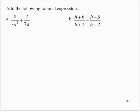So the first thing we need to do before we can add any rational expressions is find an LCD. So the LCD, we have 3 times a square. We have 7 times a. The LCD is 3 times 7 times a square.